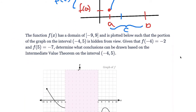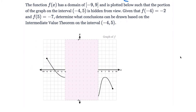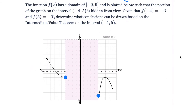Let me show you an example. Function f has a domain from negative 9 to 9 and is plotted such that a portion of the graph on the interval negative 4 to 5 is hidden from view. It's given that f of negative 4 is negative 2, and f of 5 is negative 7. So you know somewhere in that hidden region there are axes running through.